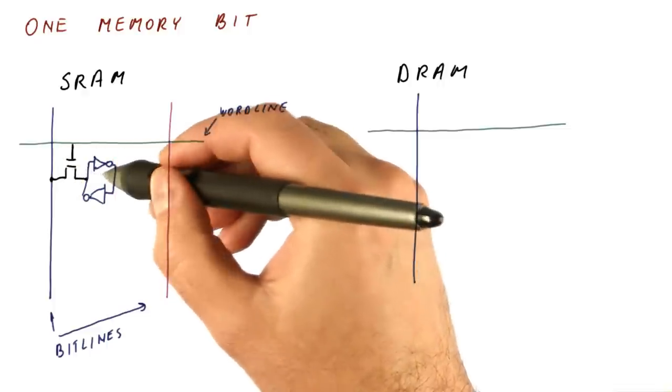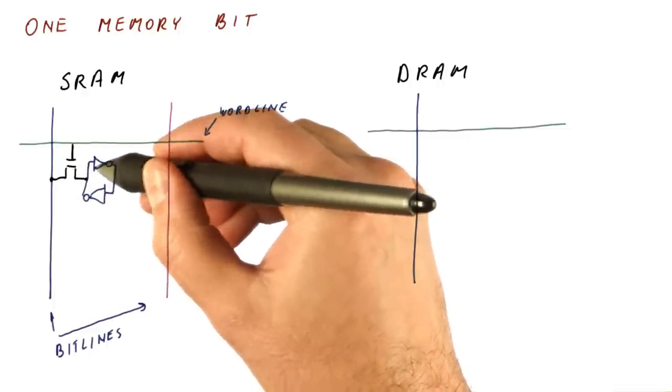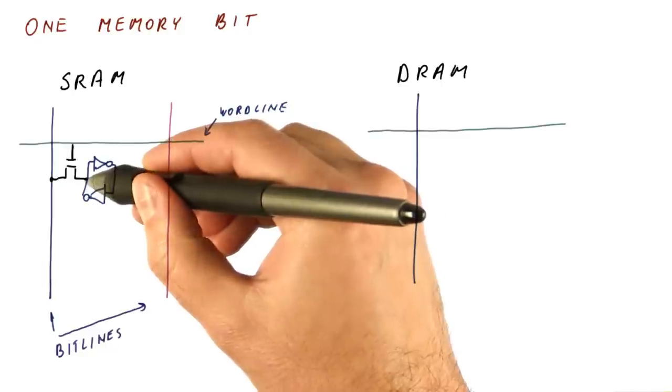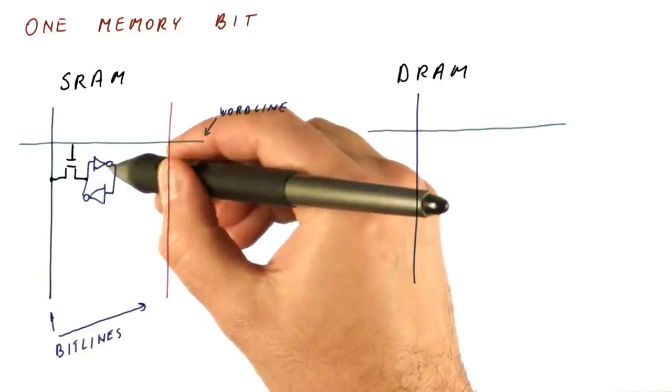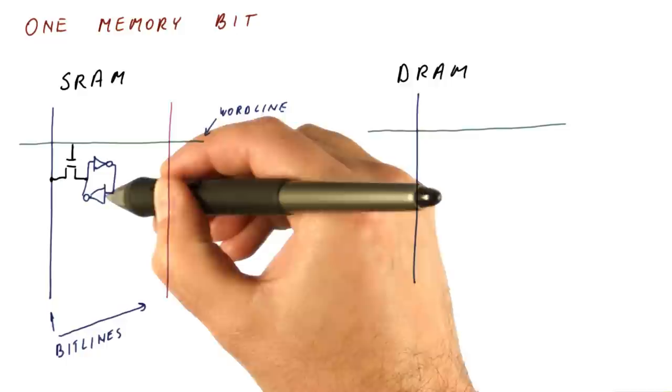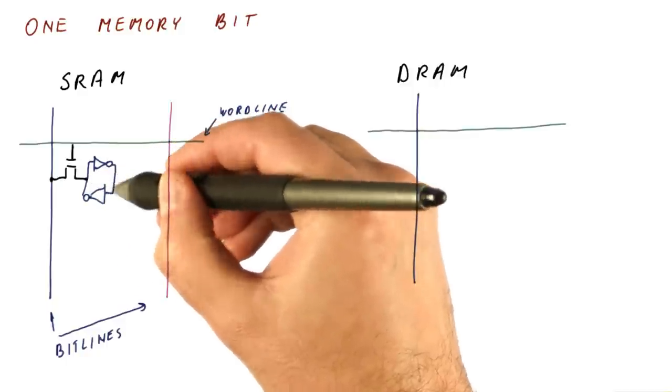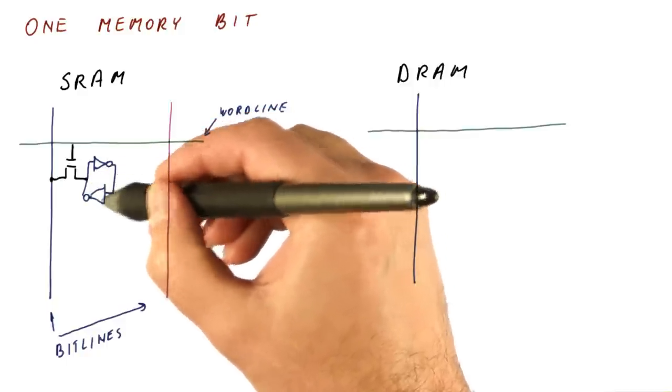So once we disconnect this transistor, this cell will keep its value. It's going to maintain a zero here because that zero is inverted and output as a one here, which amplifies this zero here. So we have a feedback loop here that keeps the data that we want.